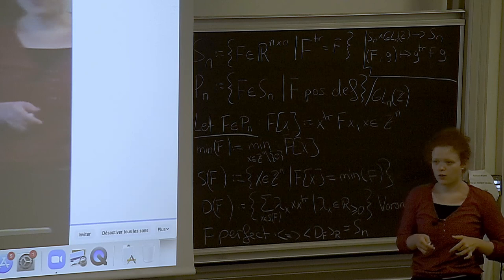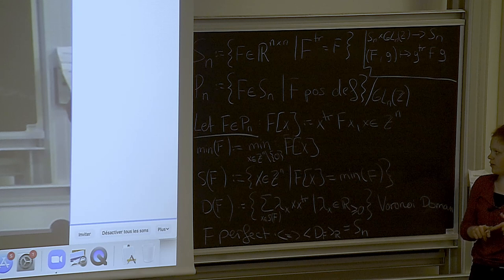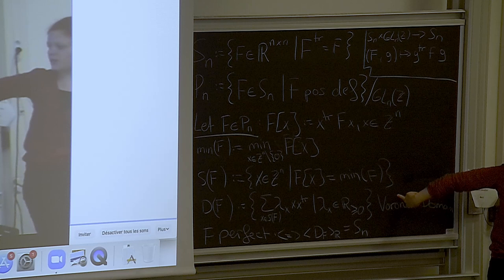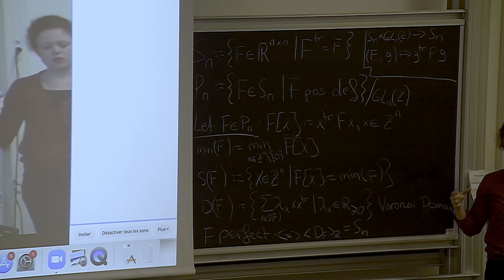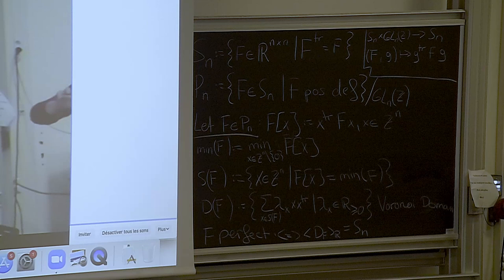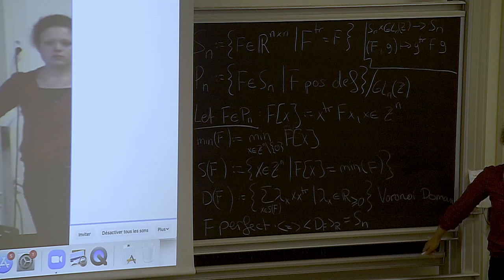And three things that we can obtain from applying Voronoi theory. For one, enumeration of perfect forms up to GL_n(Z). What we can also get is a tiling or a tessellation of Pn, which does consist of the Voronoi domains of perfect forms. And what we can also get is a corresponding graph. Whereas our vertices, we just take our representatives and we say that two vertices are connected by an edge if the two forms are neighbours. So far, any questions? Fine.